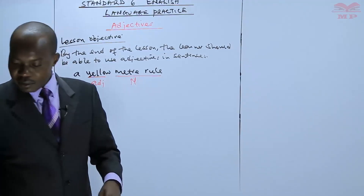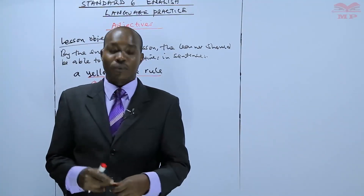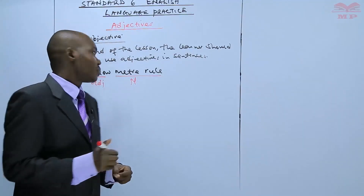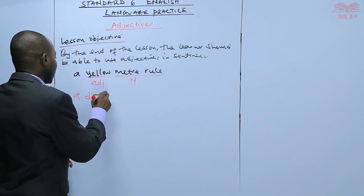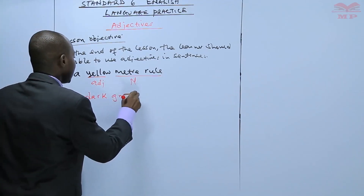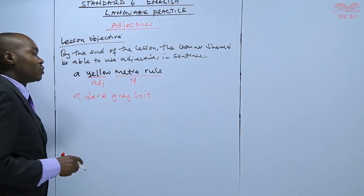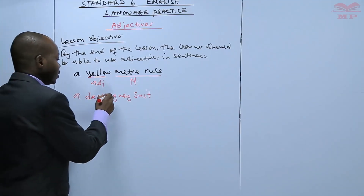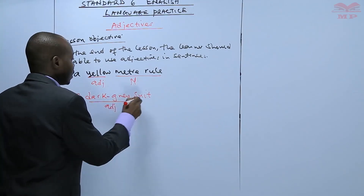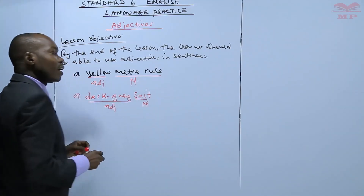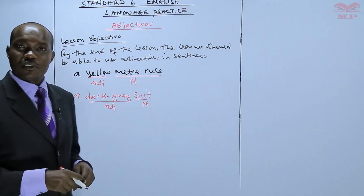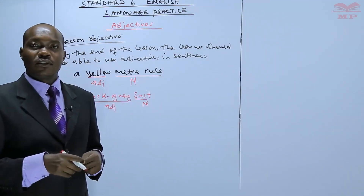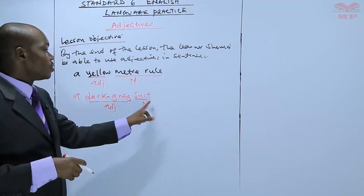Look at my suit here. What color is this? This is a dark gray suit. So dark gray is an adjective, and suit is a noun. The color of my suit is dark gray, so dark gray is an adjective describing the noun suit.